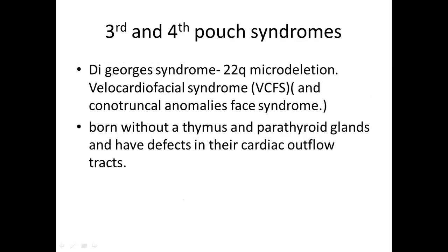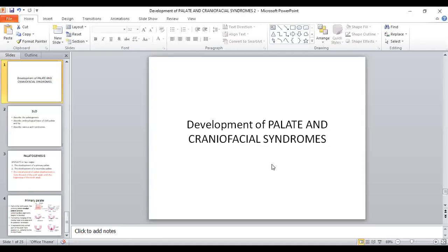The third and fourth pouch syndrome is DiGeorge syndrome, caused by microdeletion of the short arm of chromosome 22. It is also known as velocardiofacial syndrome. Because of failure of formation of the third and fourth pouches, there is absence of the thymus and parathyroid glands. There is also defective migration of neural crest cells, resulting in defective cardiac outflow tracts.